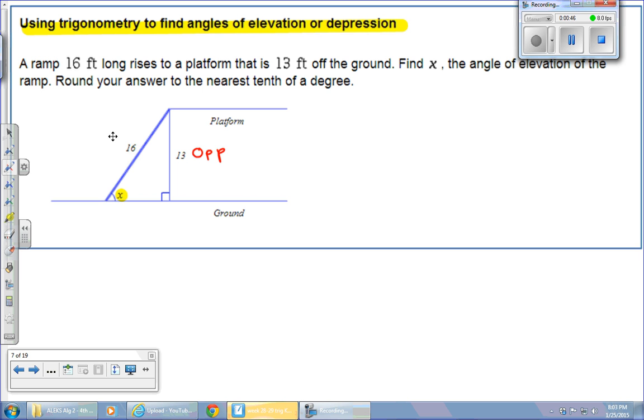And then opposite of the 90 is going to be your hypotenuse. So that's your HYP. And then attached to it is going to be your adjacent. So you got your sides figured out.